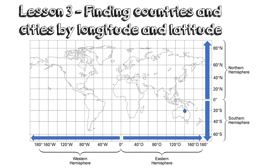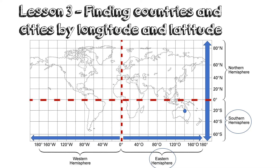Left of the zero degrees is the Western Hemisphere and right of the zero degrees is the Eastern Hemisphere. Now, let's say that we would like to find where Australia is situated. First, we need to find the equator and the Greenwich Meridian. As we have said earlier, you will realize that Australia is in the Southern Hemisphere as well as in the Eastern Hemisphere. So how do you find the coordinates? You trace back to the closest degrees that you can find in the Southern Hemisphere as well as to the Eastern Hemisphere. That means that Australia is 20 degrees south and 140 degrees east.